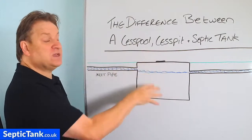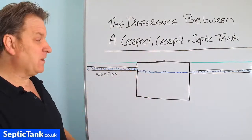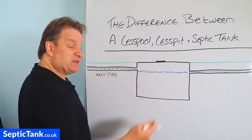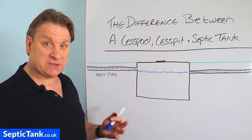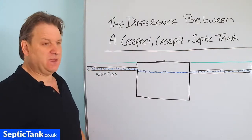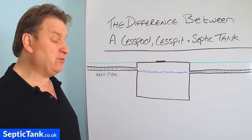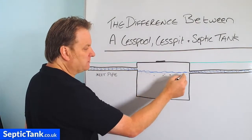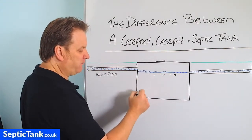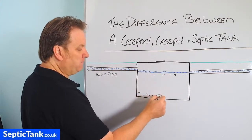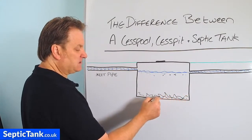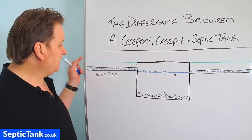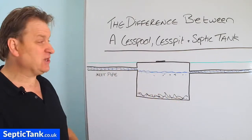So the cesspit will always stay three quarters full of liquid and over time all the debris from your household wastewater — fat, grease, sludge, poo, vegetable peelings, stuff like that — some of the bits will float on the surface but the majority will fall to the bottom and build up there as sludge. So once a year you'd get a tanker in, he'd put his pipe in and suck all the sludge out.